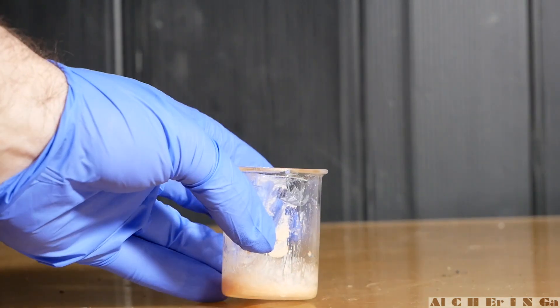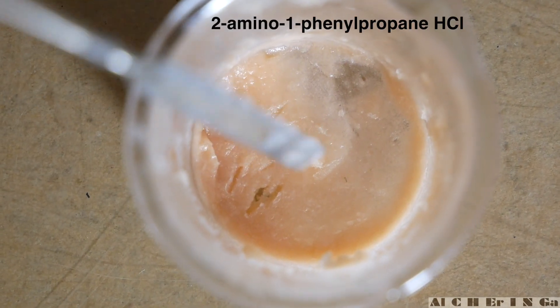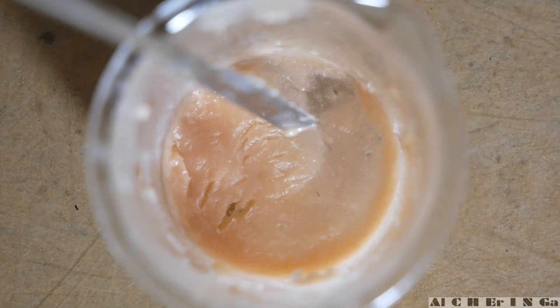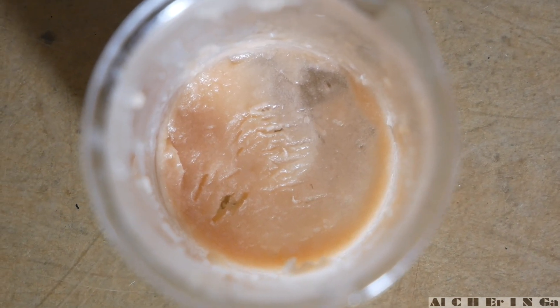As the mixture cools down, a pinkish white-colored crystals are observed. This should be moderately pure 2-amino-1-phenyl-propane hydrochloride. Note, a few more crystallizations are needed to achieve a pure white crystalline material.